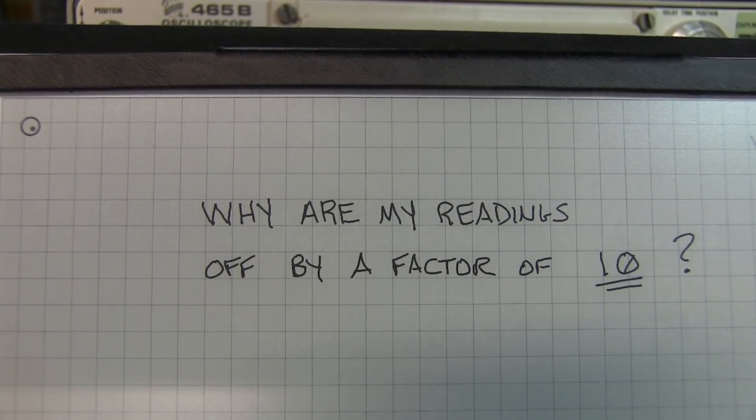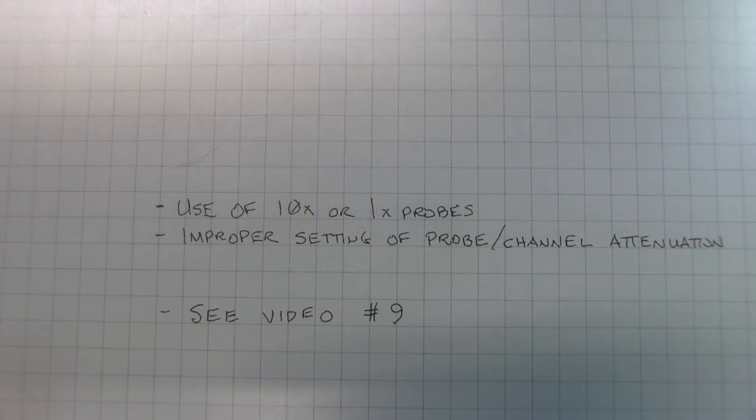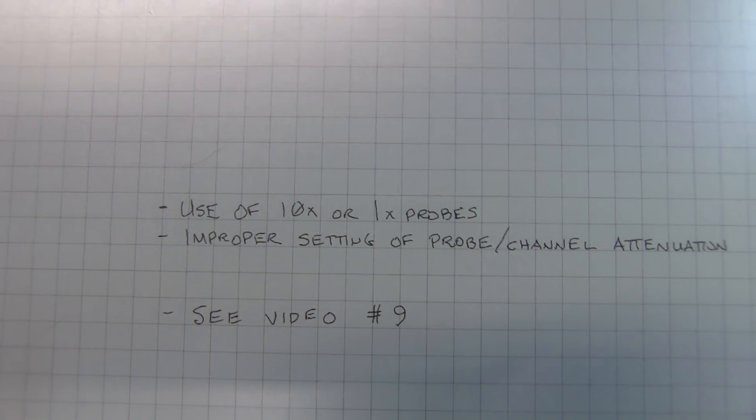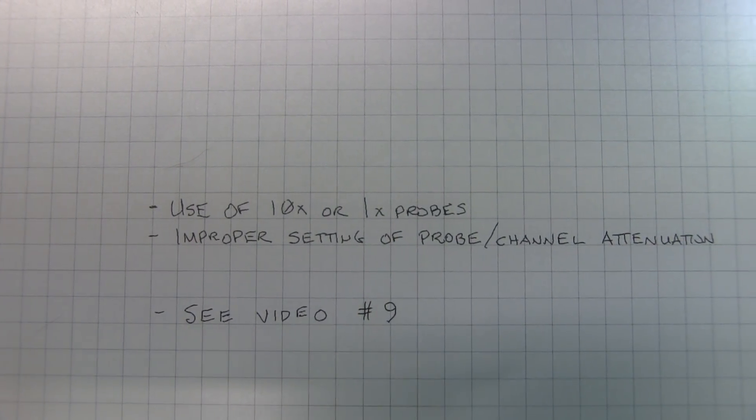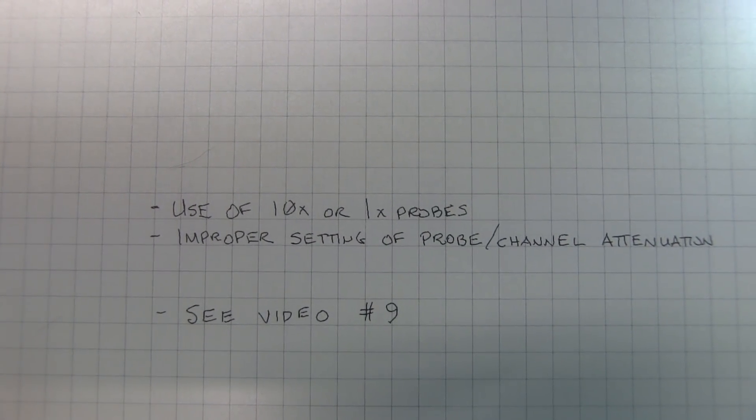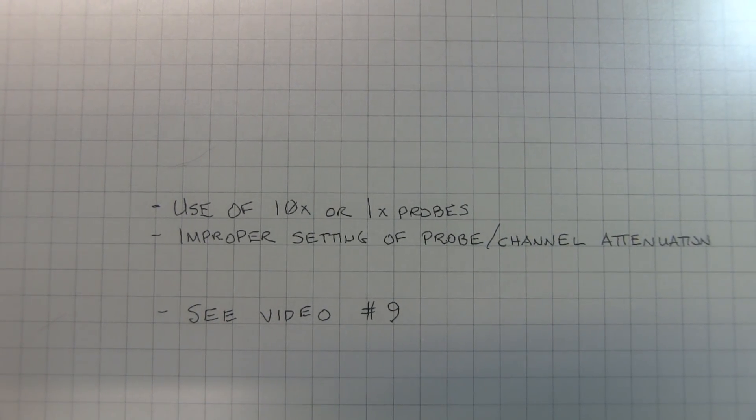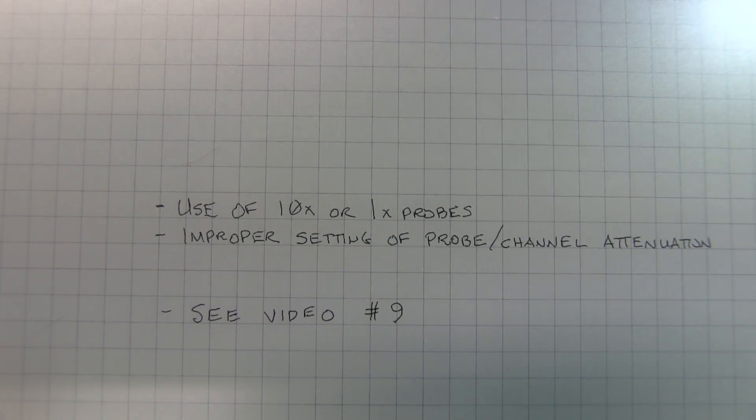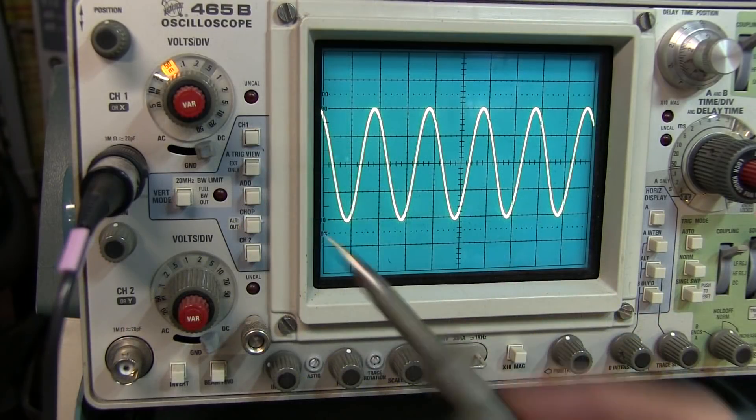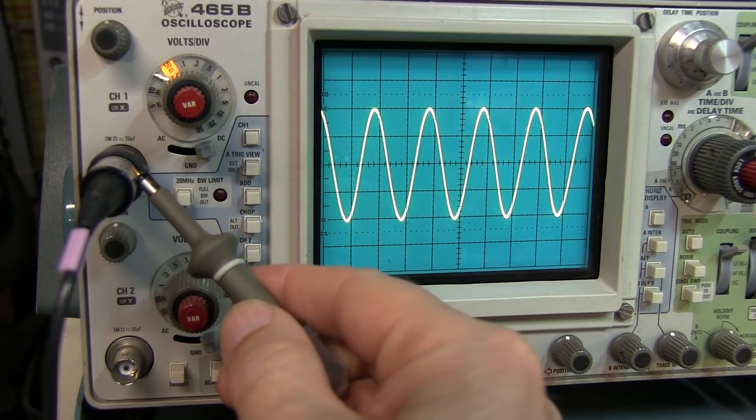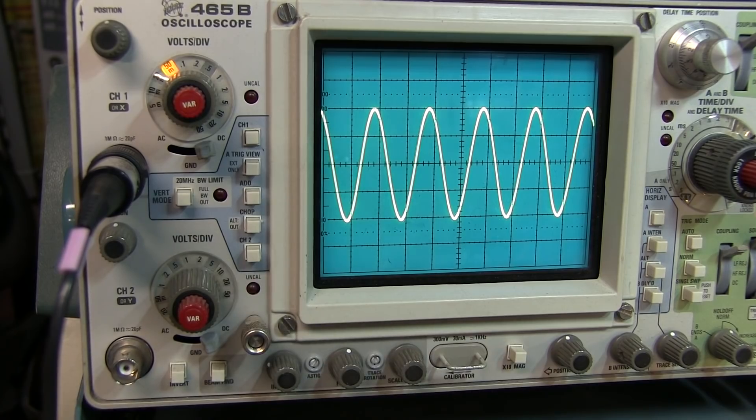Why are my readings off by a factor of ten? This most often happens when you're using 10x probes or 1x probes, and you're not properly accounting for them in the scope settings. Take a look at my video number nine to talk about 10x probes and what they are. Let's take a look at how this can happen. Now I've got a 10x probe sitting on the scope here, and it's probing a signal that should be two volts peak to peak.